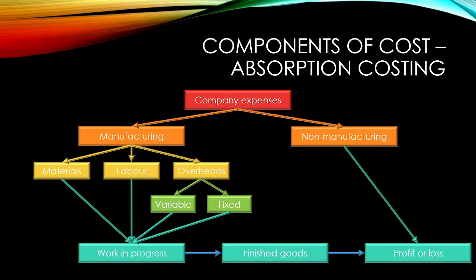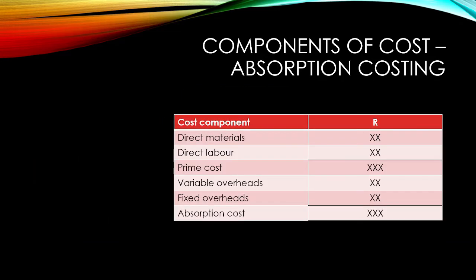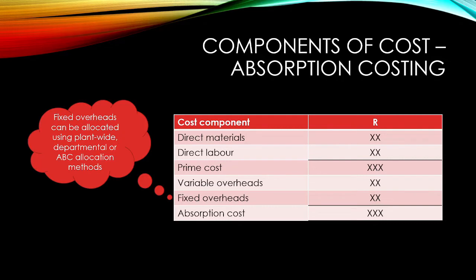Based on this, because our fixed manufacturing overheads are capitalized to inventory, absorption costing complies with external reporting requirements such as the International Financial Reporting Standards. In summary, our cost breakdown would look as follows. Note again that we are capitalizing our fixed overheads to inventory. Remember that the fixed overheads can be capitalized to inventory using plant-wide, departmental, or activity-based costing methods of allocation.